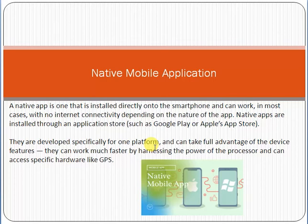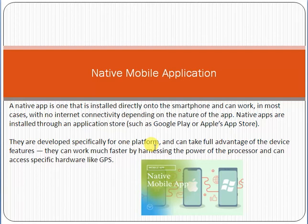These applications take full advantage of device features like the camera, GPRS, and the address book. The processing of these applications is very fast because the whole application resides on the operating system. So native applications are those which are installed on the operating system of the mobile device, and their processing speed is very high.